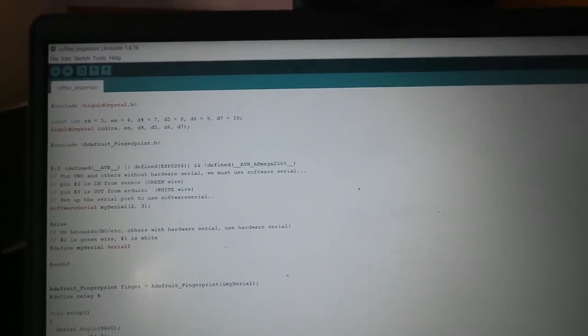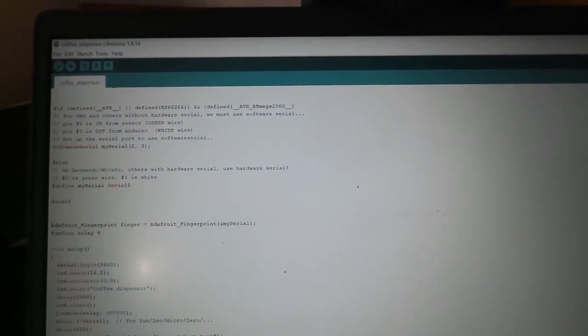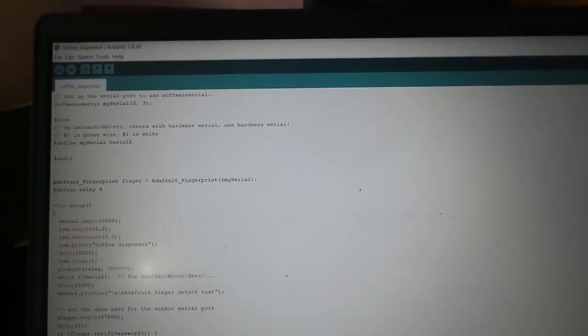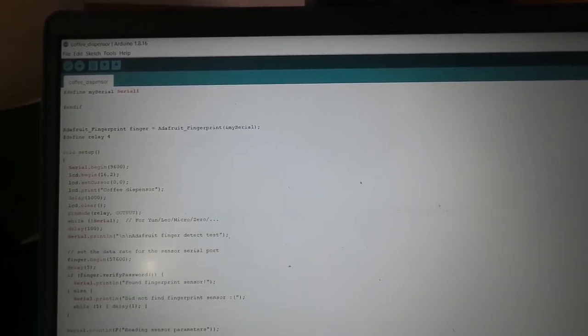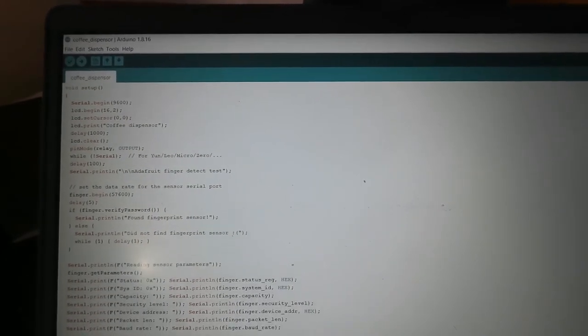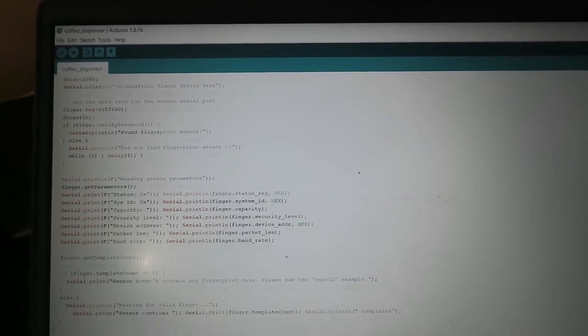Then for the main code, we are using the example code fingerprint and we are just changing the void loop part.